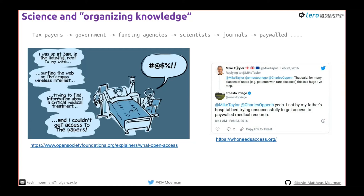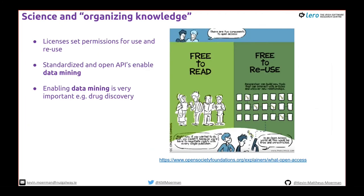That must be very frustrating if you're having to make a difficult medical decision and the information is locked away. Worldwide, people at less prestigious institutions may not have access to papers that scientists at MIT or NUI Galway have. Knowledge is organized through licenses — free to read doesn't mean you can reuse it; you may not be able to use the text, images, or data. Standardized and open APIs enable data mining, allowing automated interrogation of vast libraries of scientific papers and datasets.